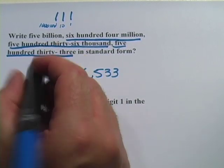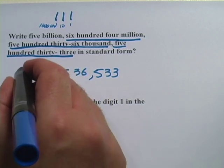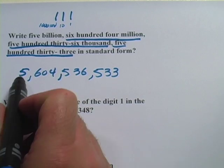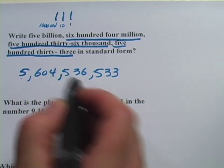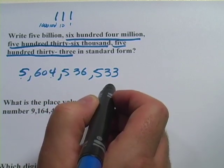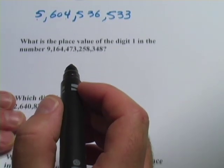And then we'll go up to the billions and it's just 5 billion. No tens of billions, no hundreds of billions. So that is 5 billion, 604 million, 536,533. Let's try another here.